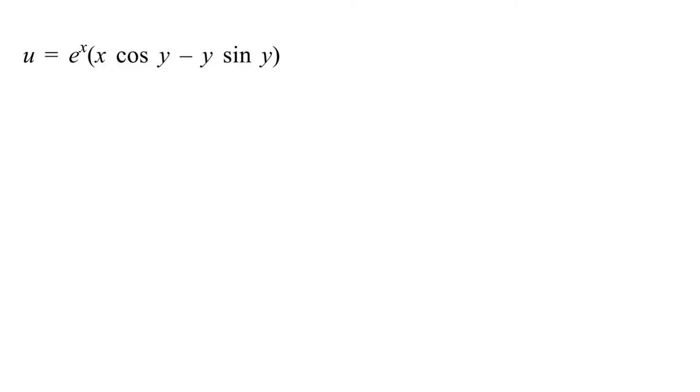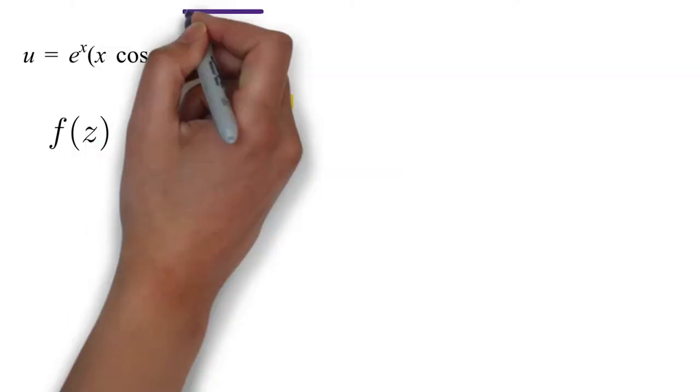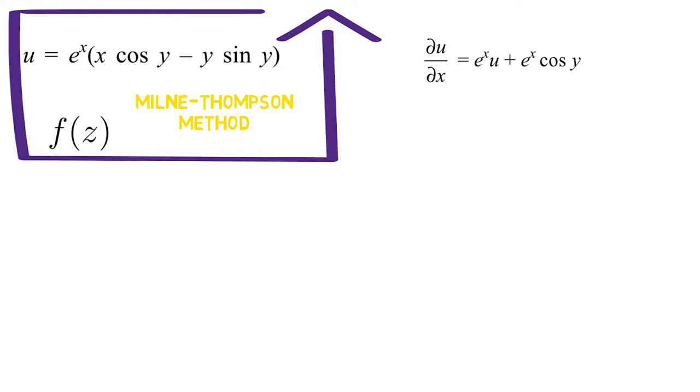Consider u equal to the following expression. We need to find f by Milne-Thompson method. So, we first find partial derivative of u with respect to x called ux and then find partial derivative of u